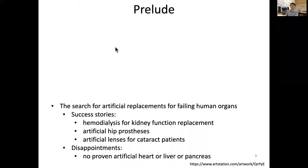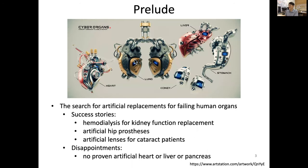First, there is an artistic form of biomaterials like this figure — an artistic illustration. You can see the heart, lungs, kidneys, liver, and stomach. This is not really true, but it's just showing the future direction: the search for artificial replacements for failing human organs, which can replace our own organs.